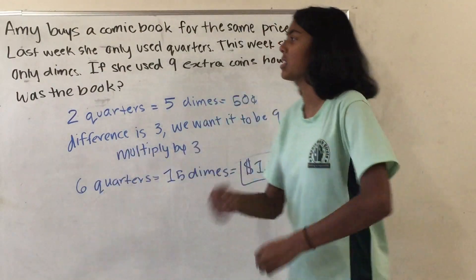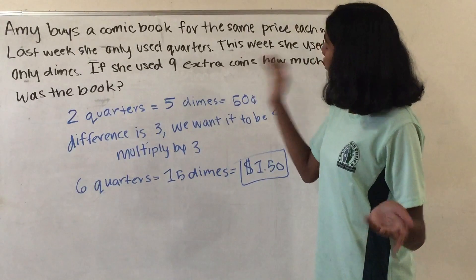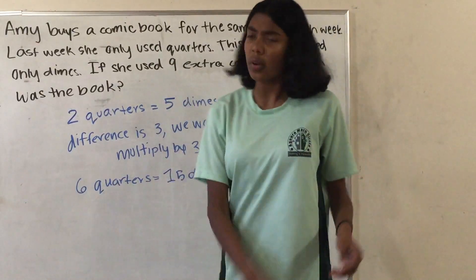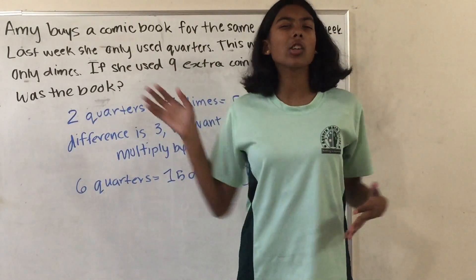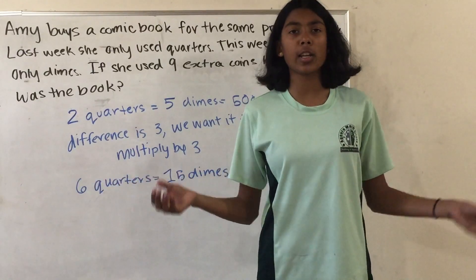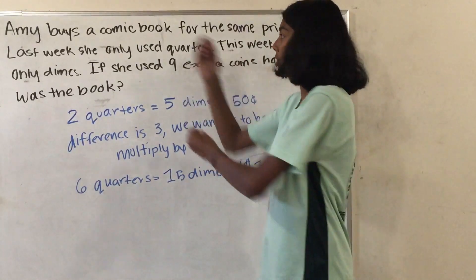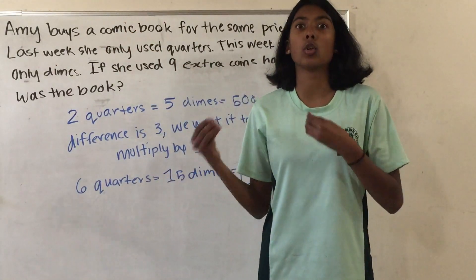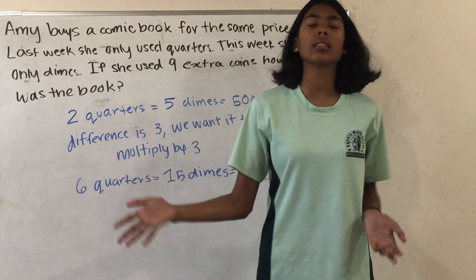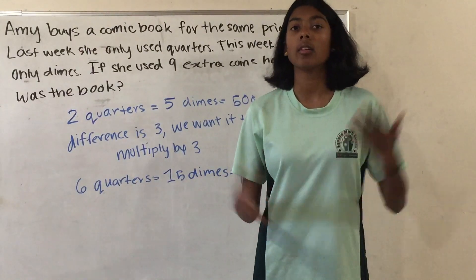Our next problem is the following: Amy buys a comic book for the same price each week. Last week she only used quarters. This week she only used dimes. If she used 9 extra coins this week, how much was the book? So let's understand the problem. We have a comic book with a certain price, which is what we're trying to find. One week Amy buys it with only quarters, and the next week with only dimes. The clue is that the number of coins she used increased by 9.